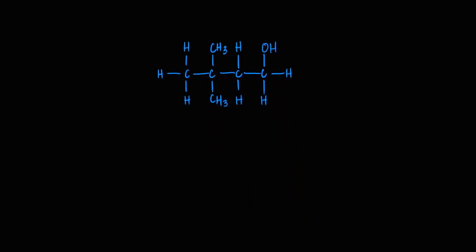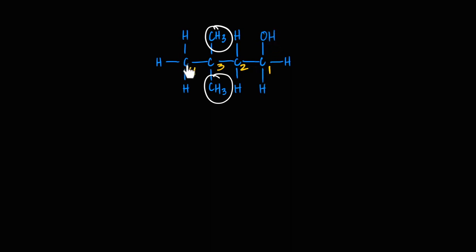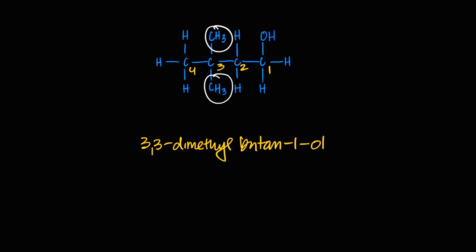Now a more complex example with more branches. The OH has priority over the CH₃ substituents, so I count from the right where the OH is on carbon one: one, two, three, four — a four-carbon chain, 'but,' all single bonds, 'butan-1-ol.' There are two methyl groups both on carbon three, so it's 3,3-dimethylbutan-1-ol.